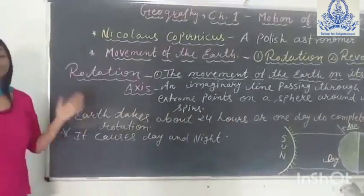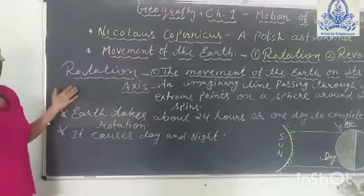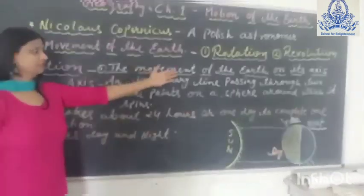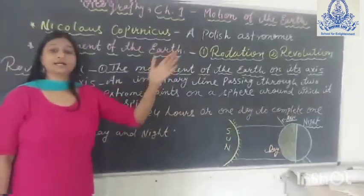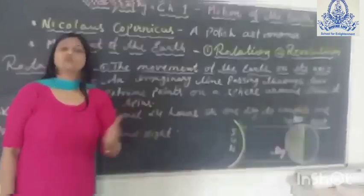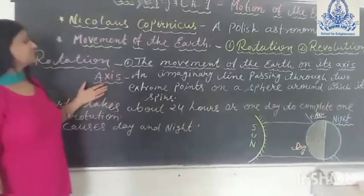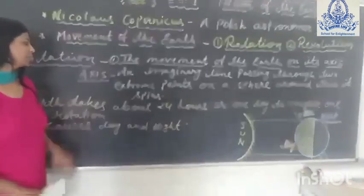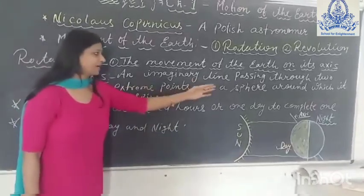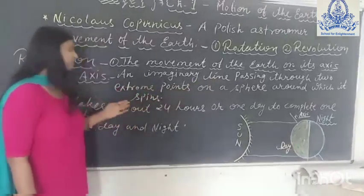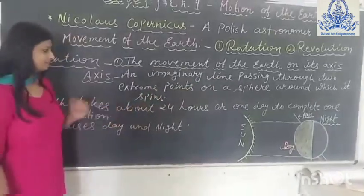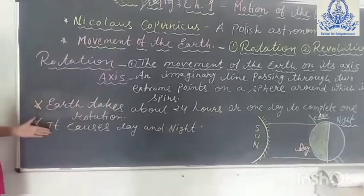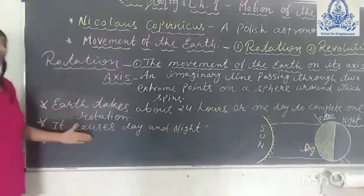What is the meaning of rotation? Rotation means the movement of the earth on its own axis. Now what is an axis? An axis is an imaginary line passing through two extreme points of a sphere, around which it spins.